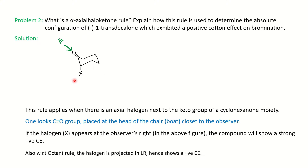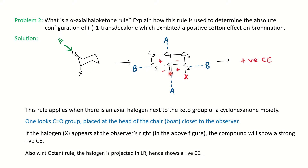You can also apply the Octant Rule to verify this. Drawing the quadrant diagram: place the carbonyl chromophoric group at center, with C2 and C6 on either side. Draw plane A and plane B. The halogen X at C2 is in the axial position, which is near the chromophoric group and falls in the positive sector. So this respective conformation gives a positive Cotton effect. You can either directly determine the position of the halogen from the observer's perspective, or draw the quadrant diagram to find the contribution towards the Cotton effect.